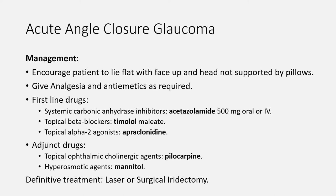For management, refer the patient urgently to ophthalmology. Encourage patients to lie flat with their face up and head not supported by pillows. Give analgesia and antiemetics as required. First-line drugs act to suppress aqueous humor production and include systemic carbonic anhydrase inhibitors such as acetazolamide 500mg oral or IV, topical beta blockers such as timolol maleate, and topical alpha-2 agonists such as apraclonidine. Adjunct drugs include topical cholinergic agents such as pilocarpine, which causes pupil constriction and opens the angle, and hyperosmotic agents such as mannitol. All of these are temporary measures; the definitive treatment is laser or surgical iridectomy.